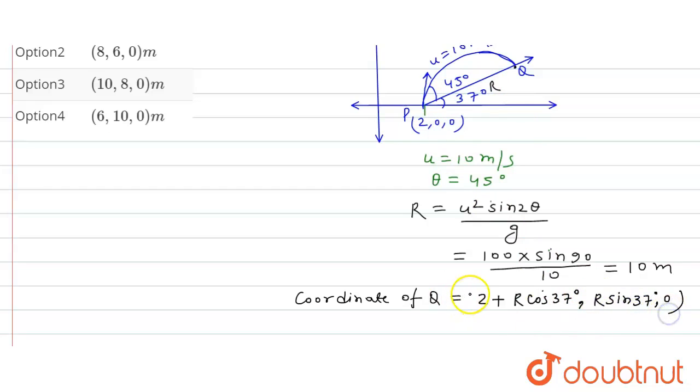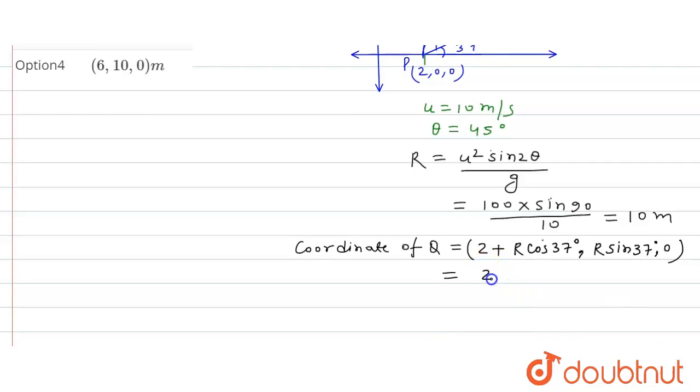cos(37°) equals 4/5, and sin(37°) equals 3/5. So from here, the z-coordinate is 0, and this will be 2 plus...